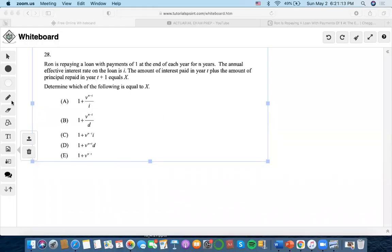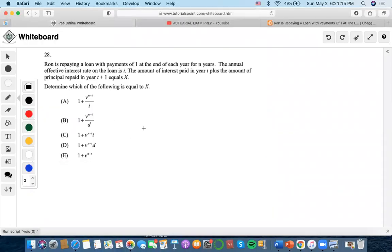Okay, so we're going to do this problem. Basically, Ron is paying a loan with payments of 1 at the end of each year for n years. The annual effective interest rate on the loan is i. The amount of interest paid in year t plus the amount of principal paid in year t+1 equals x. Determine which of the funds equals x.